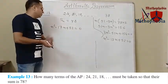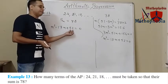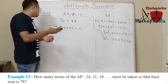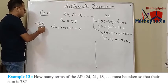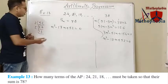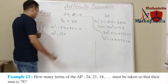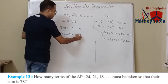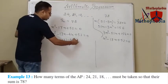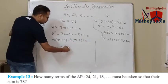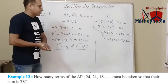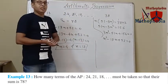Let's factorize n squared minus 17n plus 52 equals 0. We need factors of 52 that add to 17 and multiply to 52 — those are 13 and 4. So n squared minus 13n minus 4n plus 52 equals 0, giving n times n minus 13 minus 4 times n minus 13 equals 0. Therefore n equals 4 and n equals 13. So either 4 terms or 13 terms of this arithmetic progression must be taken to make the sum 78.